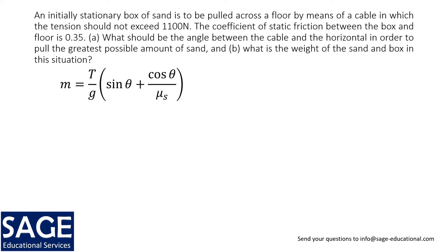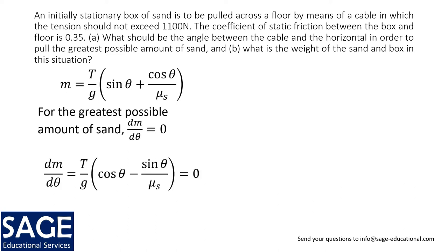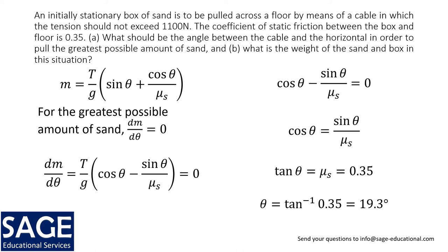In order to find the maximum amount of sand that can be pulled, I need to get the derivative of this equation with respect to theta and then set that derivative equal to zero. Remember the derivative of sine theta is cosine theta and the derivative of cosine is negative sine theta. So there's my derivative. Then I make it equal to zero, so cosine theta minus sine theta over mu s is zero. Solving this will give me tangent theta is equal to mu s, and the problem tells me that mu s is 0.35. So theta will be tangent inverse of 0.35, which is 19.3 degrees. So that's the answer to part a.